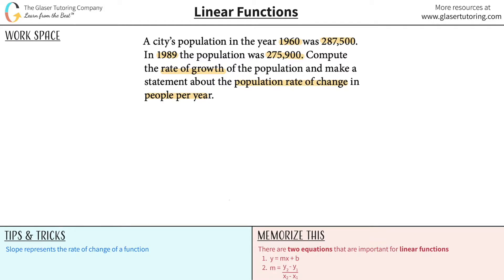So we know that we basically have two more or less points. We have two pieces of data, meaning in 1960, this was the population, and in 1989, this was the population. So knowing those two things, I can plot those points on a graph.